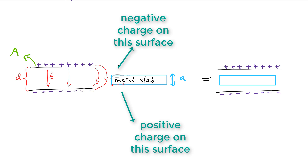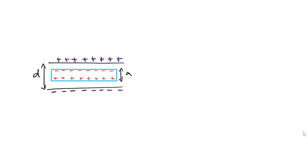This actually produces an attractive force, and the metal slab gets pulled in between the plates. At the end, we're left with the metal plate inside the capacitor, and this is what the final charge distribution looks like. Remember, the electric field inside this conductor has to be zero — you get a cancellation. The electric field from the capacitor points in one direction, and the electric field within the conductor is equal and opposite, so the total electric field is zero inside the conductor.